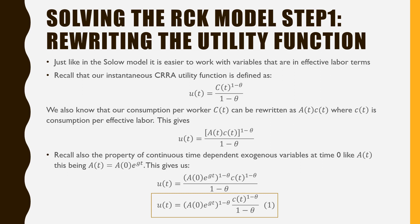Solving the RCK model, step number one: you have to rewrite the utility function. Just like in the Solow model, it is easier to work with variables that are in per effective labor terms. Recall that our instantaneous CRRA utility function is defined as u(t) = c(t)^(1−θ) / (1−θ). Our consumption per worker c_t can be rewritten as A_t times c̃_t, where c̃_t is consumption per effective labor. This gives us u(t) = (A_t · c̃_t)^(1−θ) / (1−θ).